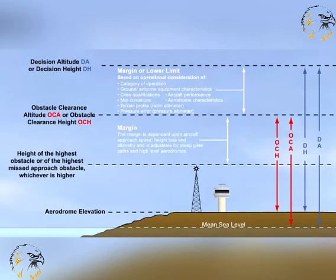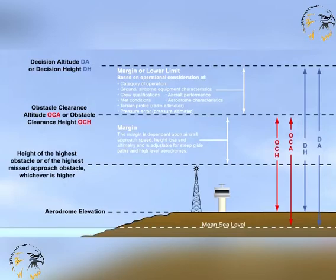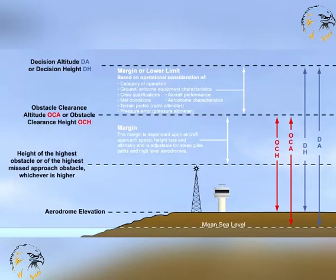In the case of precision, non-precision, and circling approaches, an OCH or A is specified for each category of aeroplane. The OCA or H for a precision approach procedure is defined as the lowest altitude, or height above the elevation of the runway threshold, at which a missed approach must be initiated to ensure compliance with the appropriate obstacle clearance criteria. This is very similar to the definition of decision altitude or height: the lowest altitude or height above the elevation of the runway threshold at which a missed approach must be initiated when the required references to complete the landing visually cannot be seen. Going around at this juncture will ensure compliance with the obstacle clearance criteria of OCA or H. The various factors which dictate that the DA or H equals or most often exceeds OCA or H are shown in the diagram.